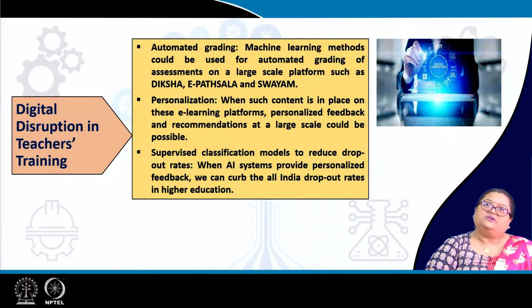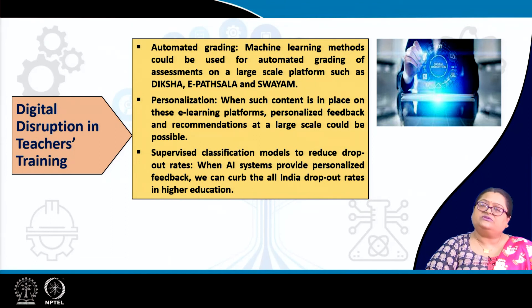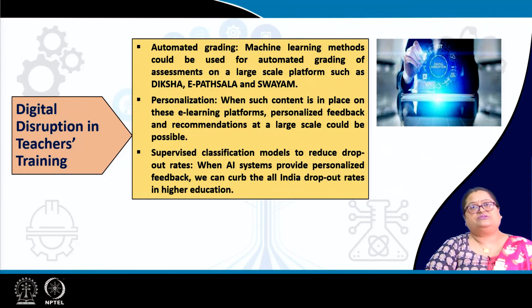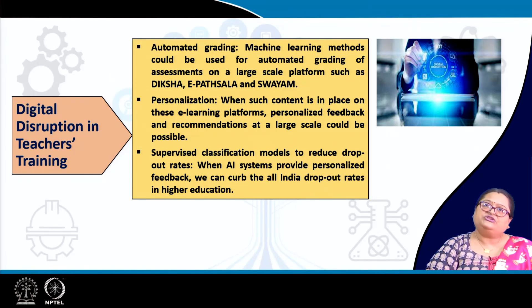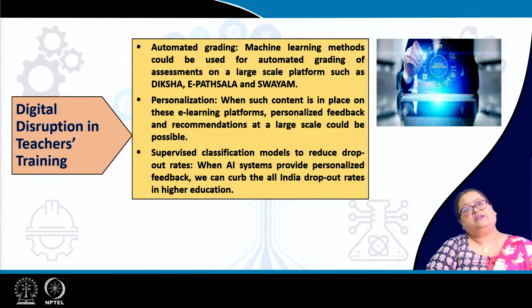Automated grading: machine learning methods could be used for automated grading of assessments on large-scale platforms such as Diksha, ePatshala, and Swayam. Personalization: when such content is in place on e-learning platforms, personalized feedback and recommendations at scale could be possible. Supervised classification models to reduce dropout rates: when AI systems provide personalized feedback, we can curb the all-India dropout rates in higher education.